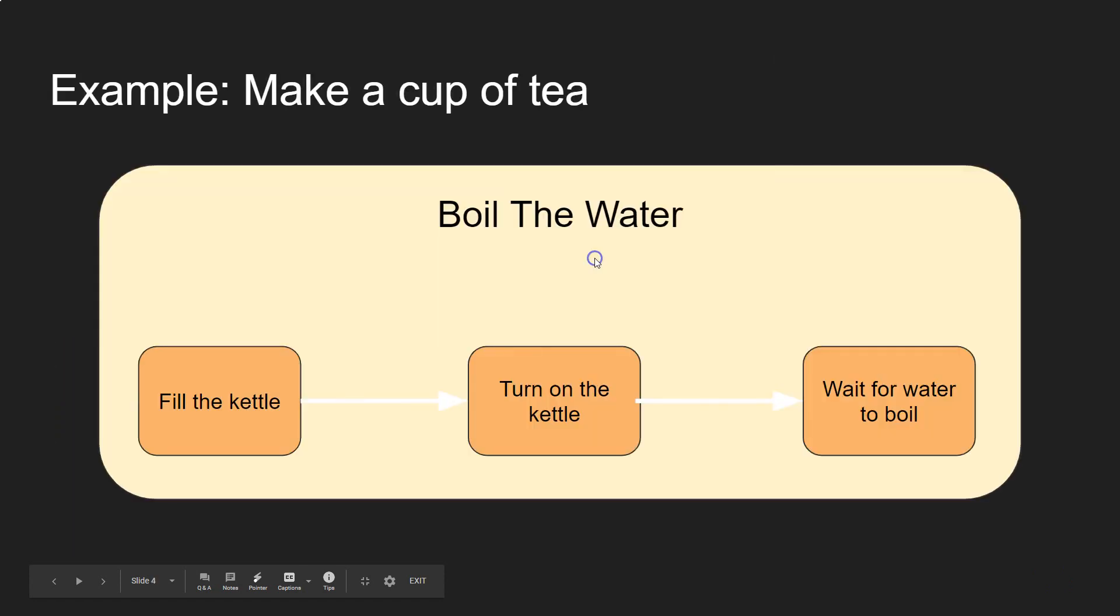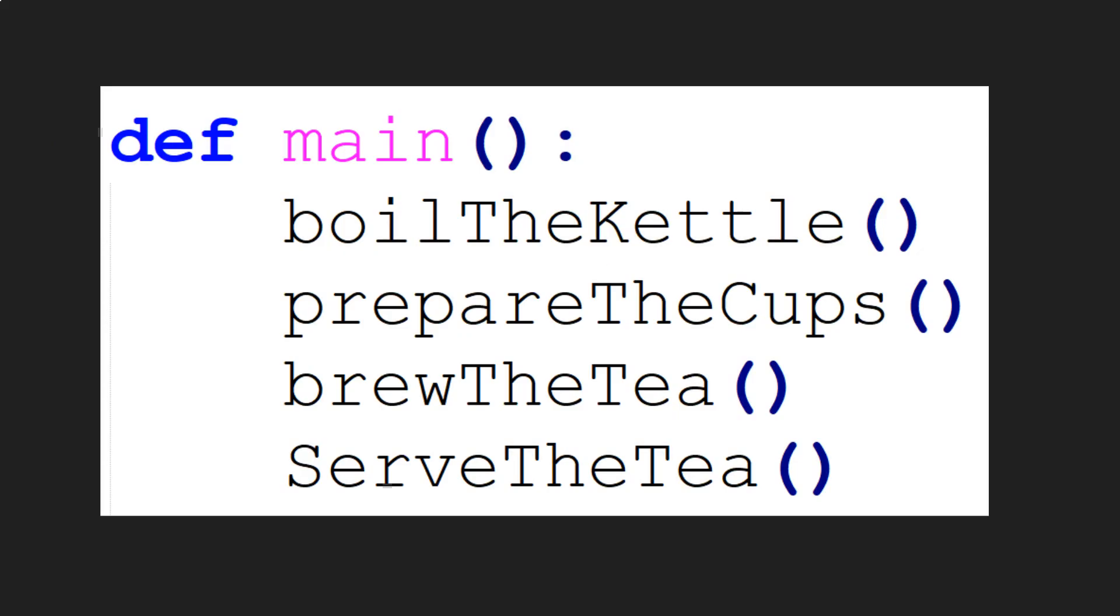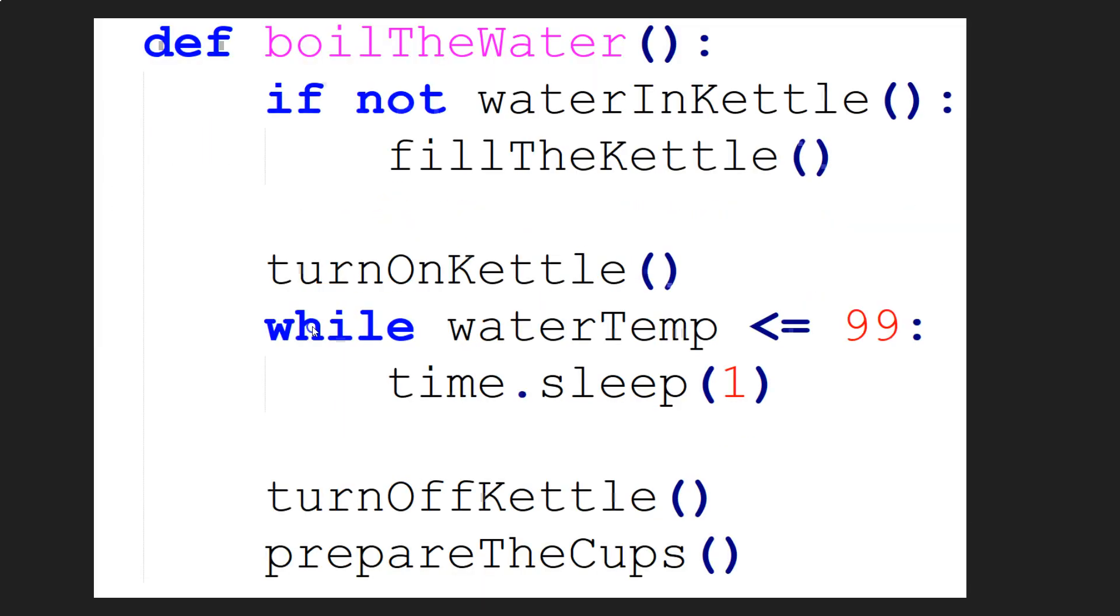So what would that look like in Python? Well, one way to approach it would be to break it down into individual functions and procedures. So the top level here would be the main procedure and I broke it down into four steps. So I just create four procedures or functions depending on what they're going to do. I'd have like the boil the kettle procedure, prepare the cups procedure, the brew the tea procedure, and then finally serve the tea. So that would be the main function and then that would call these sub functions.